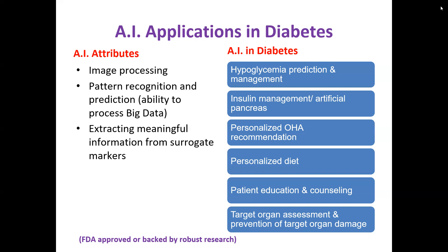AI enables personalized OHA recommendations and personalized diet education programs as part of precision medicine. Patient education and counseling can now be done using robots — you teach the robot everything about diabetes education and it gives answers to patients and family members, counseling and educating them. Each time a patient asks a question, the robot will have the answer, and new information can be added over time.